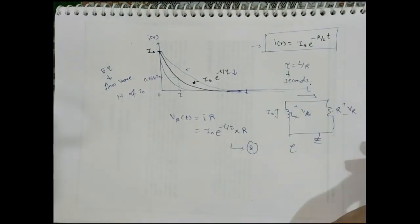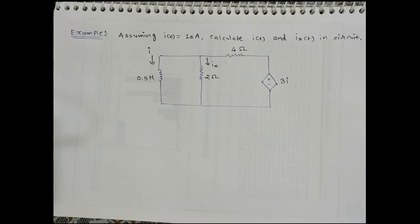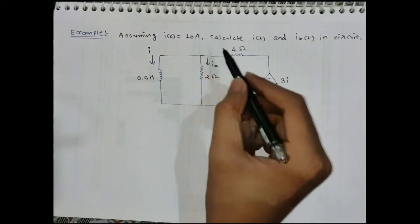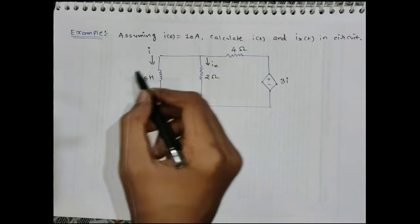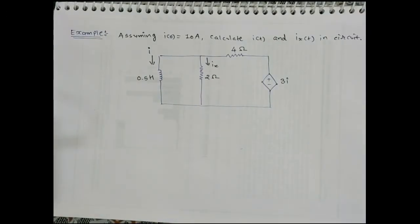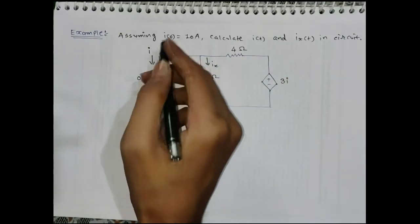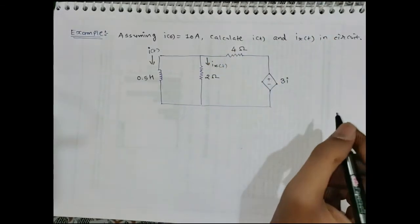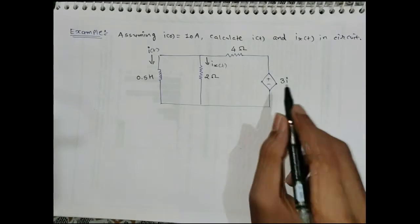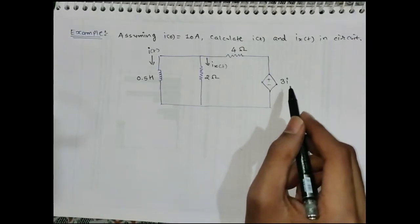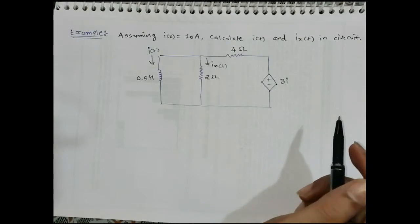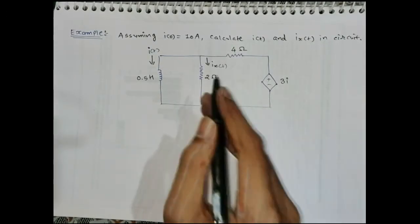This is the natural response of the source-free RL circuit. Now let us solve an example. In the given circuit, assume the initial current I₀ = 10 A. We need to calculate I(t) and I_x(t), where I_x(t) is the current through the 2-ohm resistor. The circuit also has a dependent voltage source of value 3I. There are two ways to solve this example.